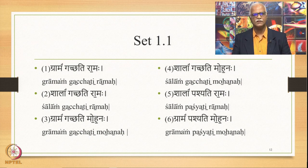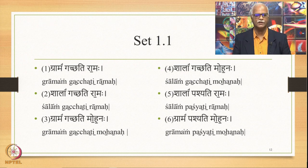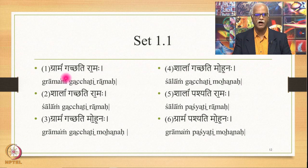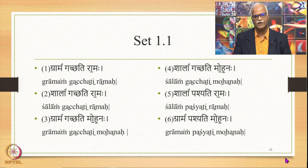Let us look at the data sets with accent marks. We have already seen Gramam Gatchati Ramaha, Shalam Gatchati Ramaha, and so on. Now we have an additional feature: the accent marked on them. These are all the sentential accents — we see there is a vertical bar on top of Mam, there is no symbol in Gatchati, there is a horizontal bar below Ra, and so on. What is the meaning of all these symbols and how are these accents constructed out of their constituents?